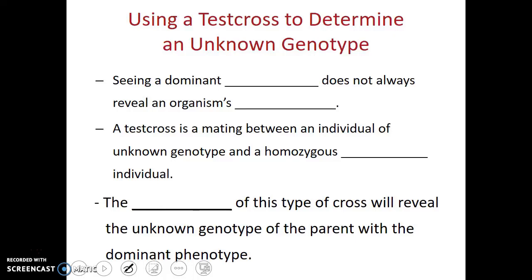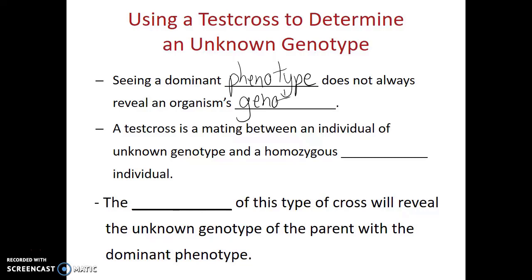We're going to talk about ways in which we can figure out what the genotype of an organism is. Because just seeing a dominant phenotype does not always reveal an organism's genotype. If the organism looks dominant, we don't know if they're homozygous dominant or heterozygous. So one way to possibly get an answer to that is to perform a test cross.